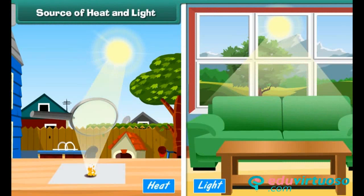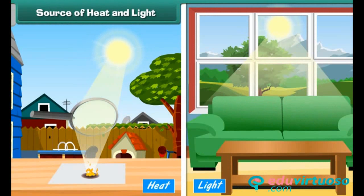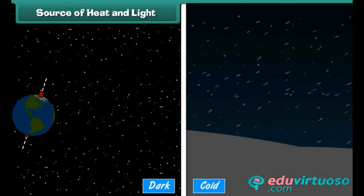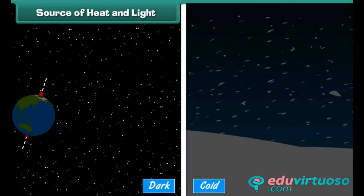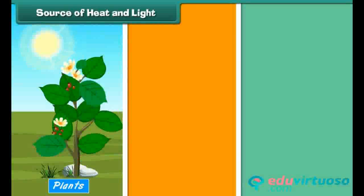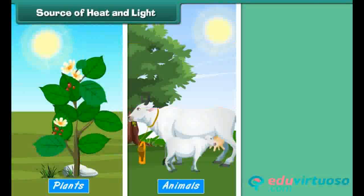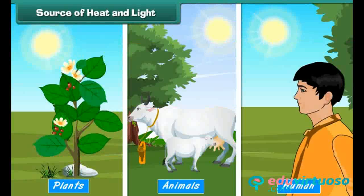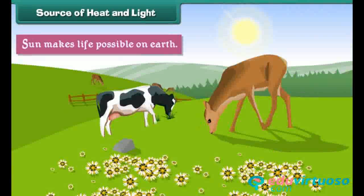The sun gives us heat and light. Without it, earth would be very dark and cold. Plants, animals, and human beings would not be able to live on it. The sun makes life possible on earth.